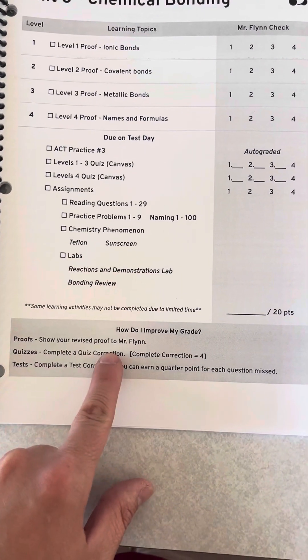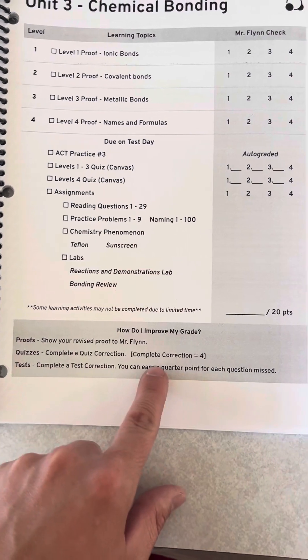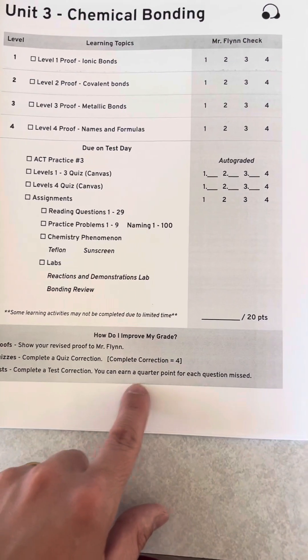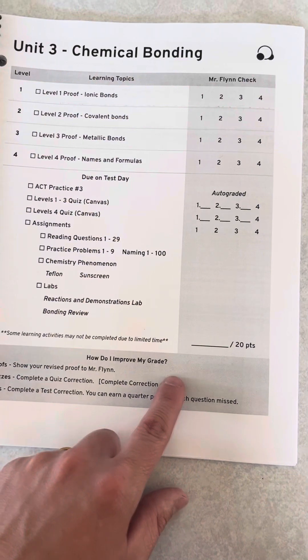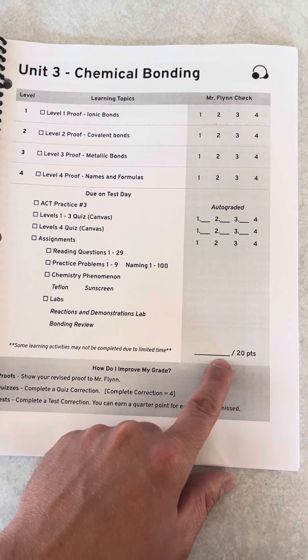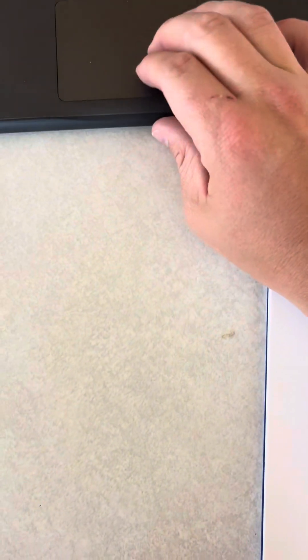Like proofs, show your revised proof to me. Quizzes, complete a correction. Complete corrections equals a four. Test corrections, you earn a quarter point back. So they know exactly what they can get. And then they can get a final score for that unit. And I just put that grade in. It's simple. And also one last thing I'll put on this.